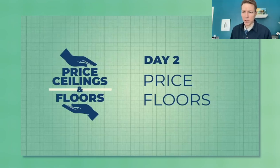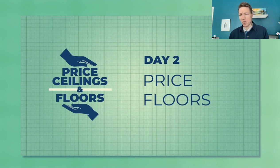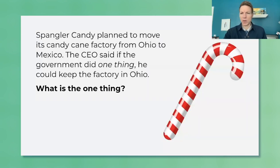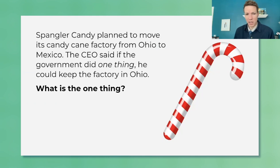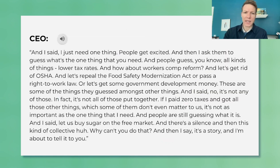Welcome to day two of our price controls, price ceilings, price floors unit plan. Today is price floors — the second day. We open the unit with a question: Spangler Candy is an American company with a factory in Ohio, and the CEO says they're going to move the factory to Mexico. Ask your students to guess the one thing he said that, if different, would keep the factory in Ohio.